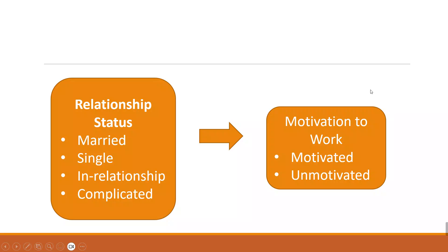The chi-squared test of independence is testing the relationship between two categorical variables. In a questionnaire for this, the participant simply checks whether they are married, single, or whatever, and for motivation they check if they are motivated or not. These are categorical variables — they don't involve numbers, just simply words.